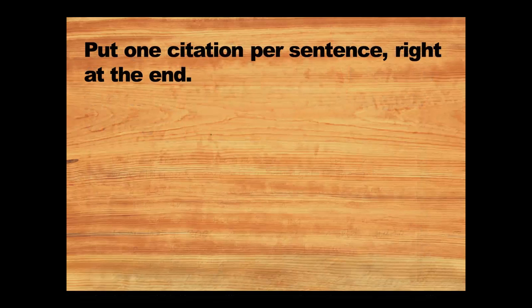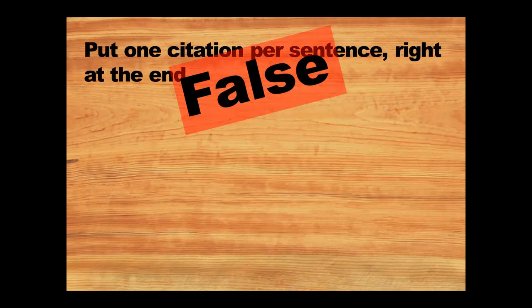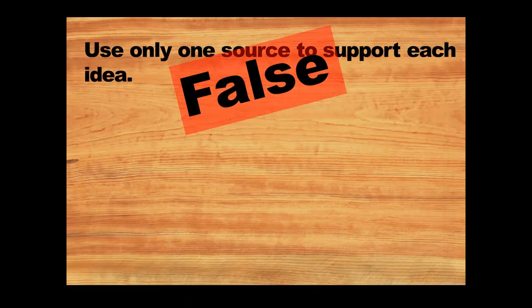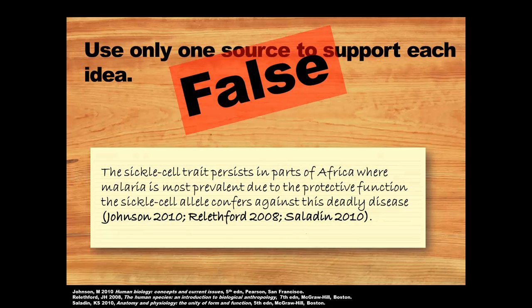Another myth is that you should put one citation per sentence right at the end. That's false. You need to put citations in wherever it makes sense — you might include one person's ideas at the beginning of a sentence, another person's ideas in the middle, and someone else's ideas at the end. Some students also think you should only use one source to support each idea, but this is false too. If you've read the same idea in multiple sources, list all the sources that support that idea, or at least the key ones, alphabetically, separated by semicolons.